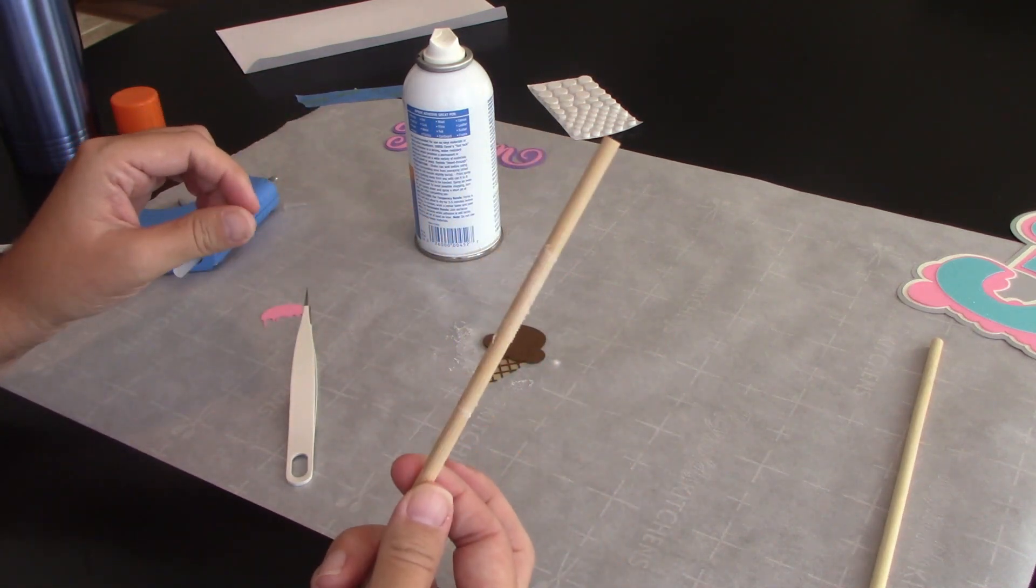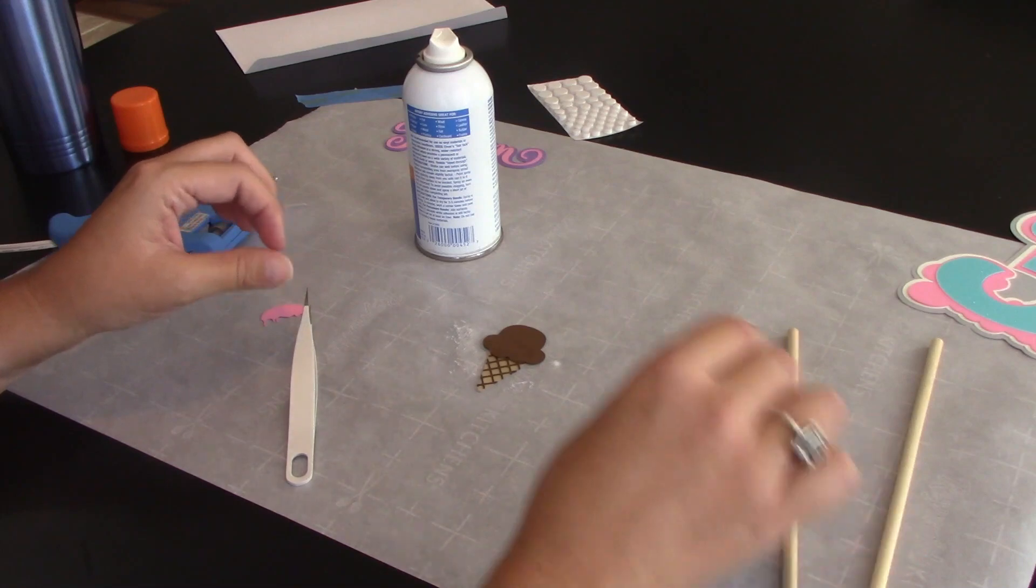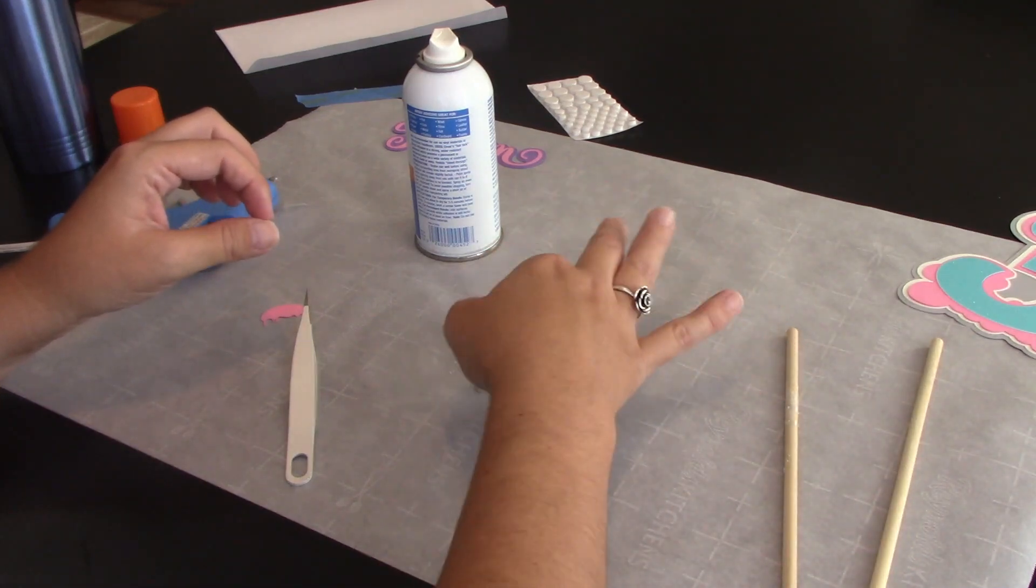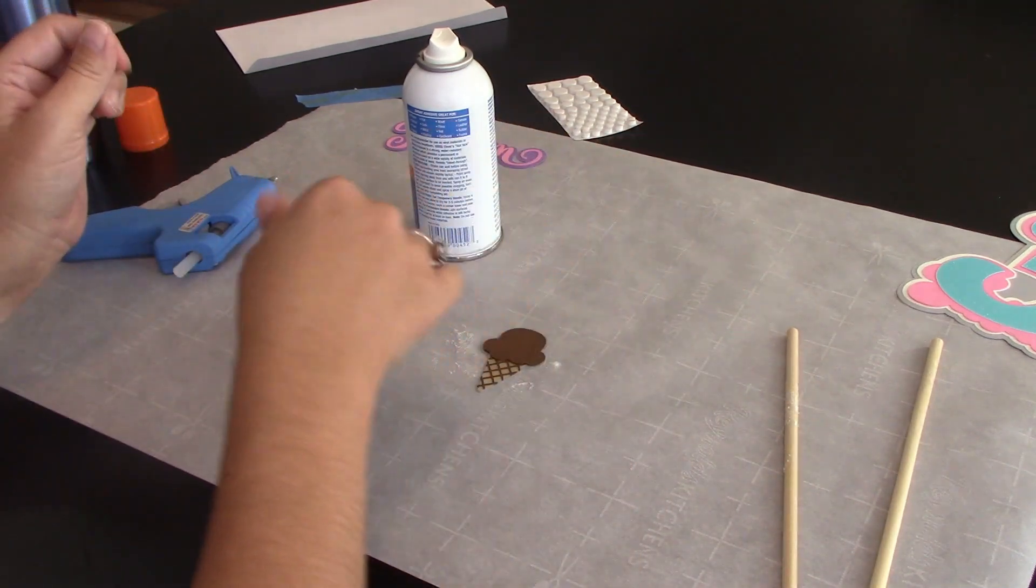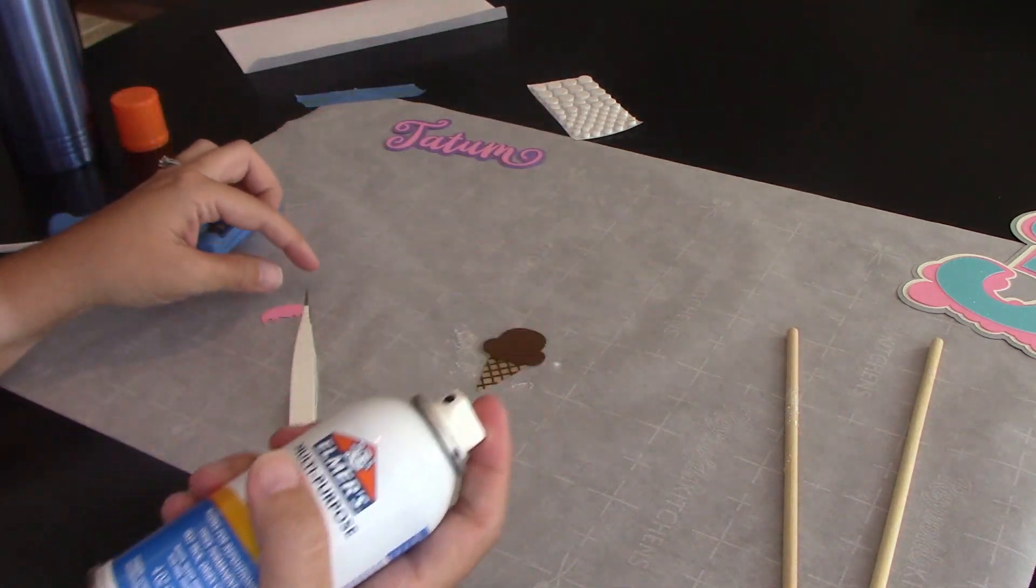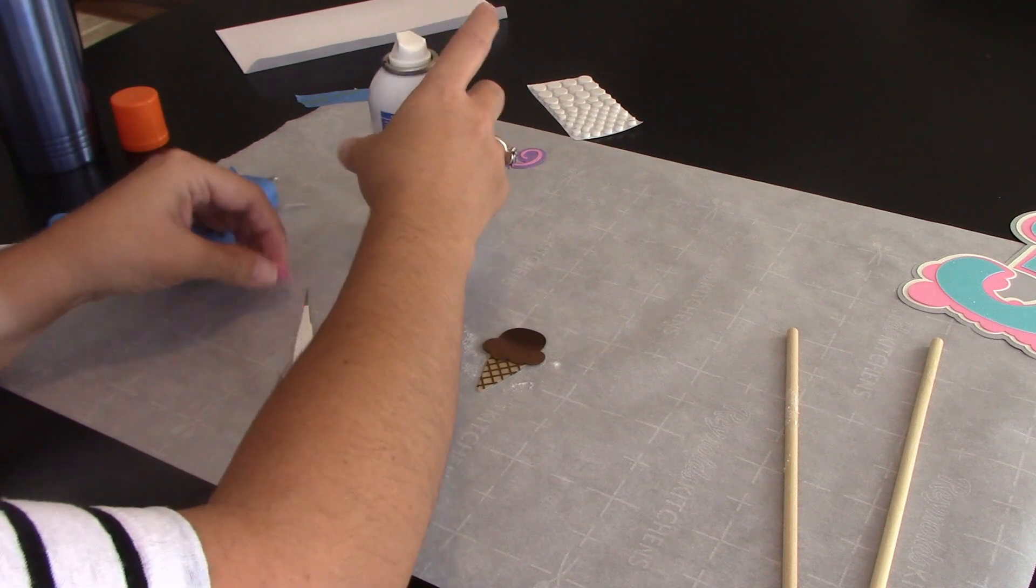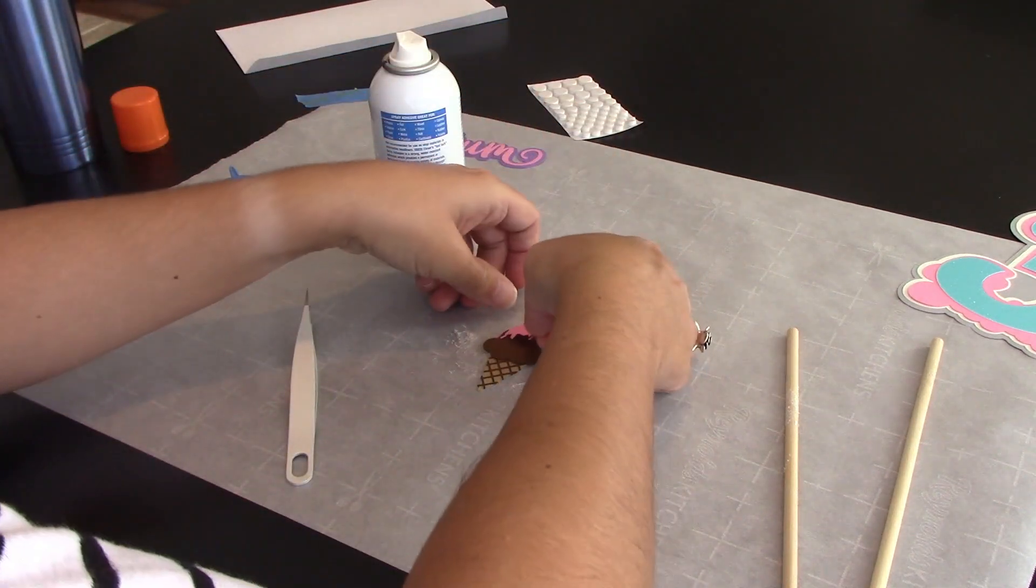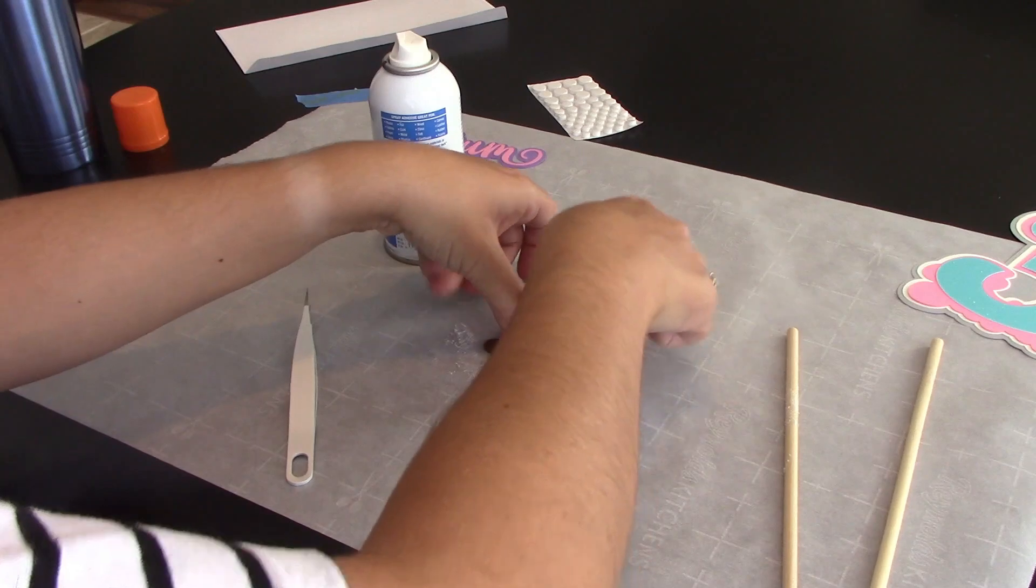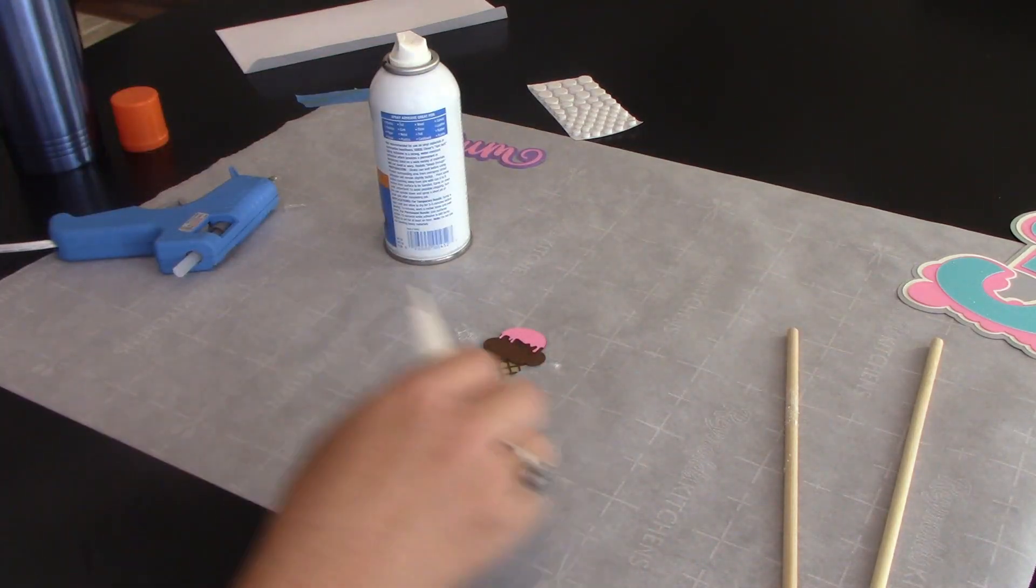I'm going to use this stick again to kind of roll and get everything on there. Do you see all the glue that I just got on my stick? This stuff is super sticky. I mean, it's going to be permanent when you're done. One more spray for the toppings. And now my ice cream cone is done.